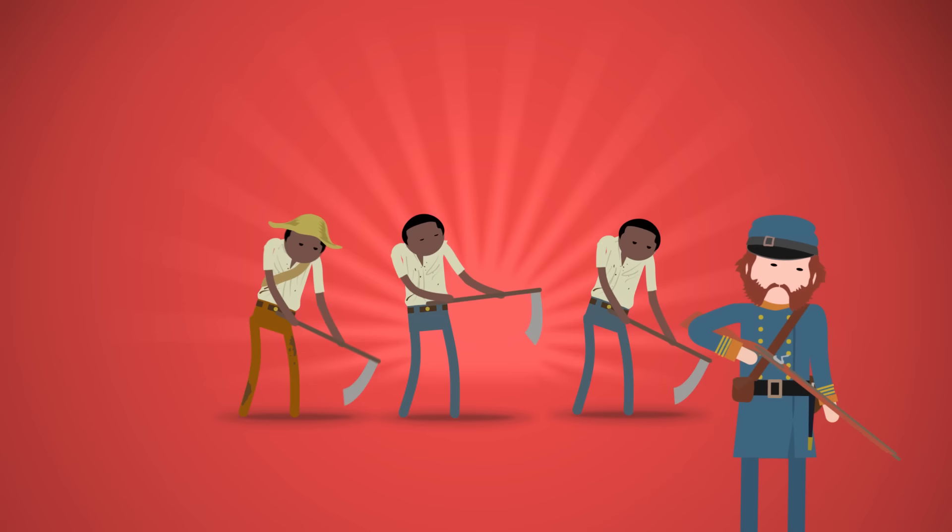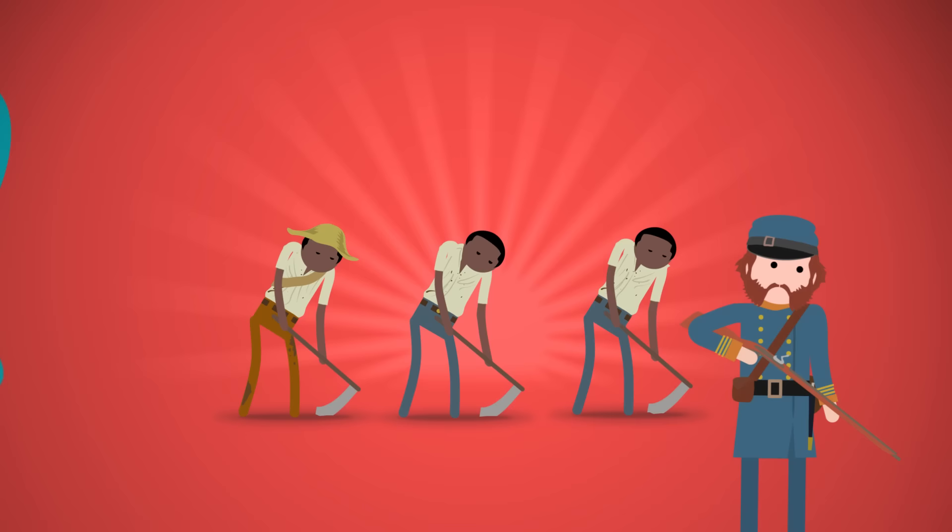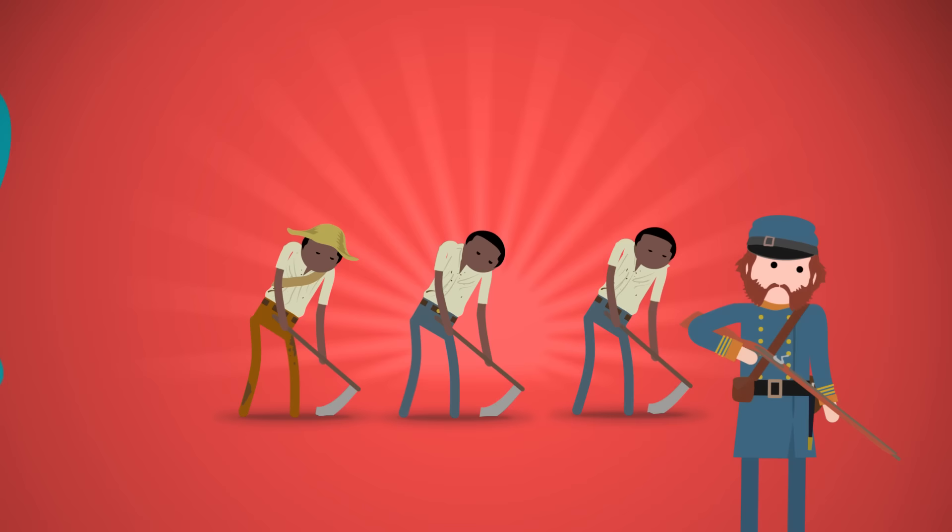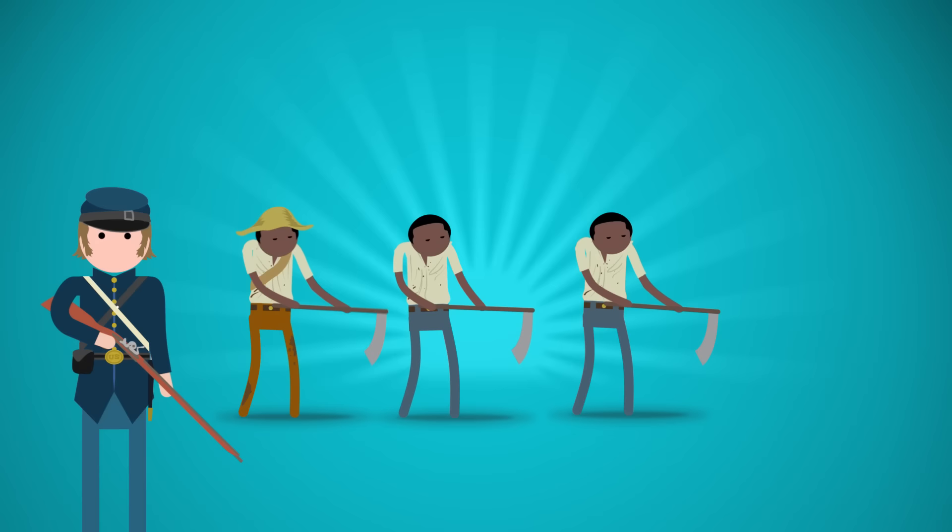In areas where the U.S. did have the authority to free slaves, the border states and some areas of the Confederacy that had been effectively conquered and occupied by federal troops, those slaves were not freed, so Lincoln didn't free the slaves that he actually had the power to free.